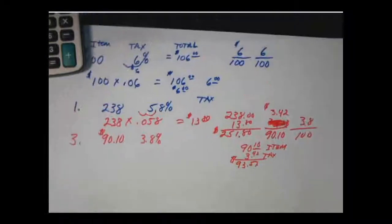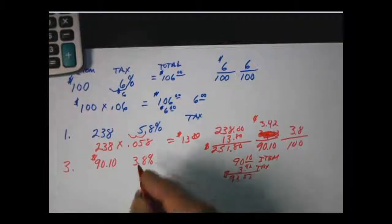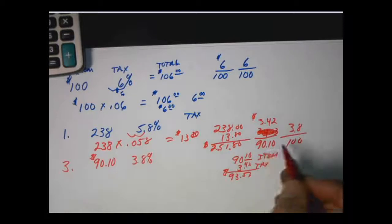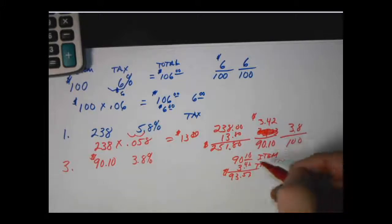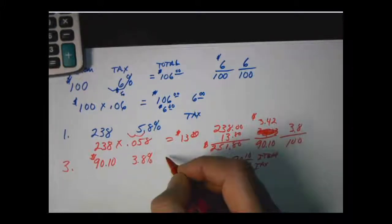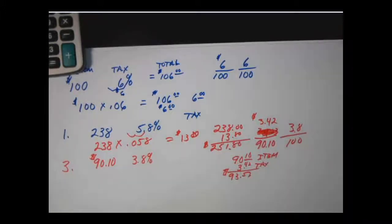You can do it either way. Change it to a decimal and multiply, or set it up as an is over of type of a problem with a percent. Cross multiply divide and then add the tax on, or answer the exact question if they want the price of the tax or the sale item or whatever.